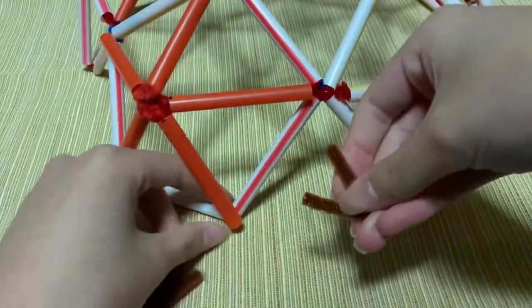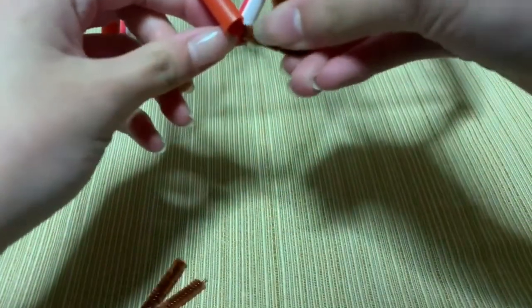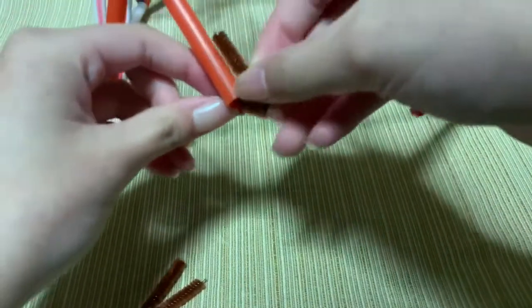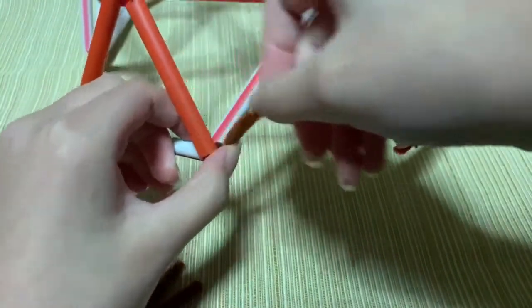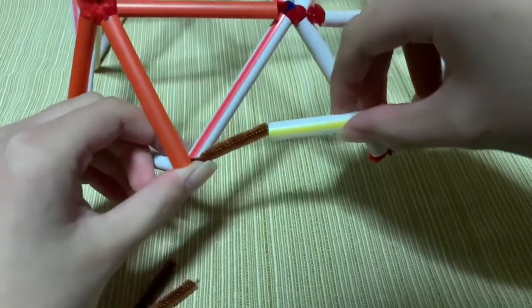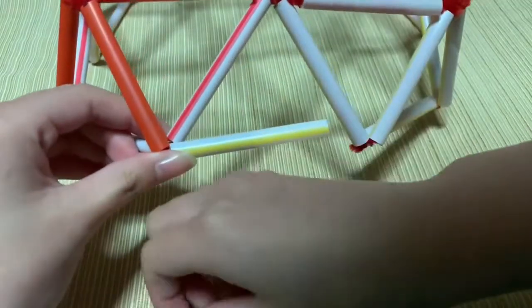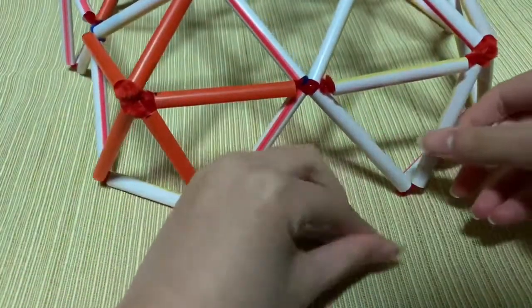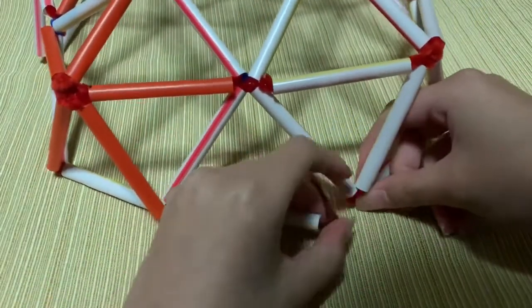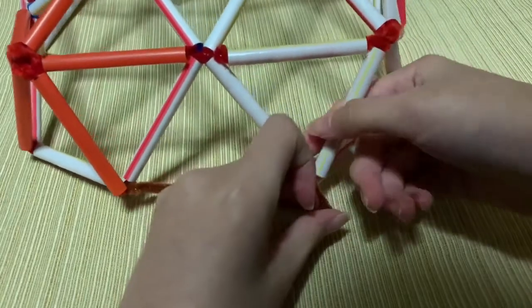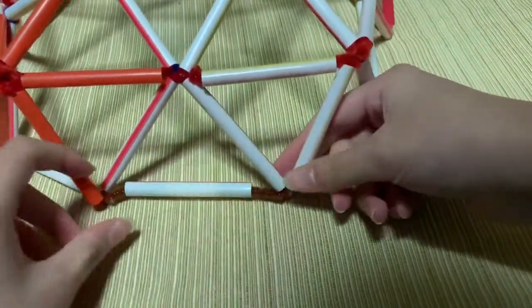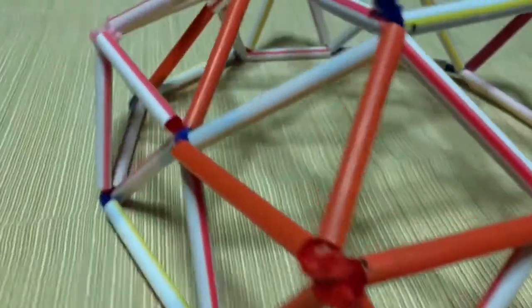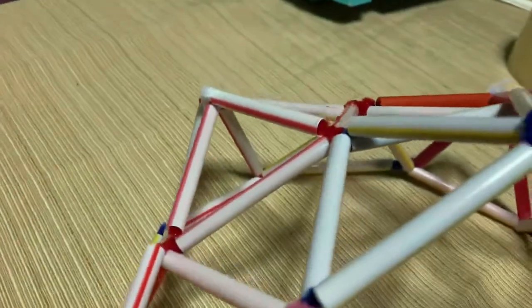After securely attaching all six pentagons together, prop the dome up. Add five 2.75 inch pieces, or strut A's, between each pentagon using two connector pipe cleaners for each. Now that you've finished, your geodesic structure is officially done.